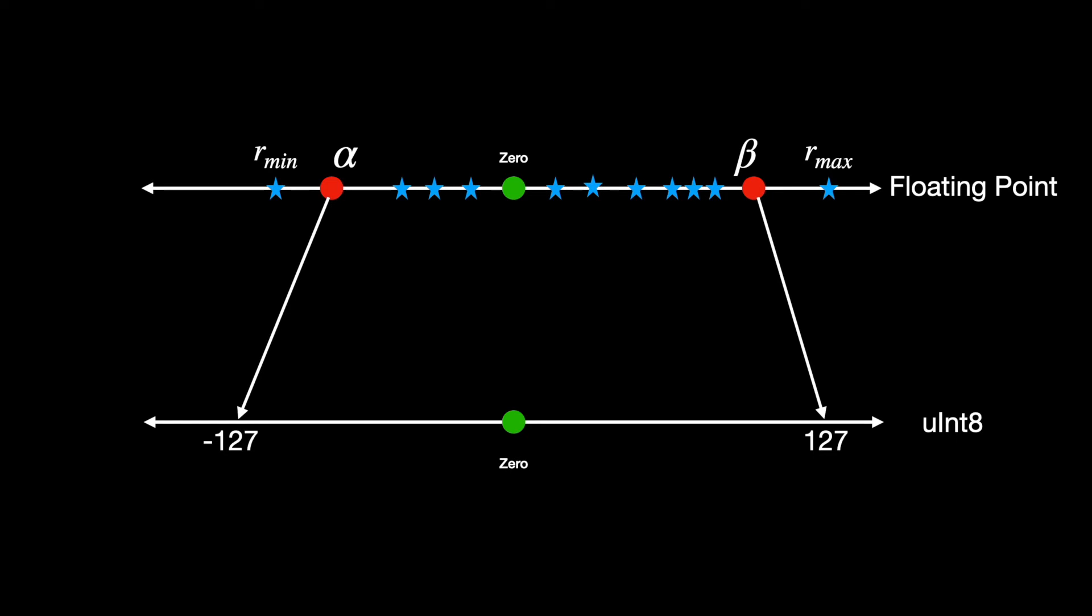We can, however, choose to clip this input at some point, say alpha for negative values and beta for positive values. Any value beyond alpha and beta is not meaningful because it maps to the same output as that of alpha or beta. In this example, it's minus 127 and plus 127. The process of choosing these clipping values, alpha and beta and hence the clipping range is called calibration.